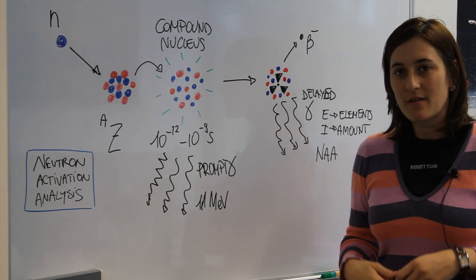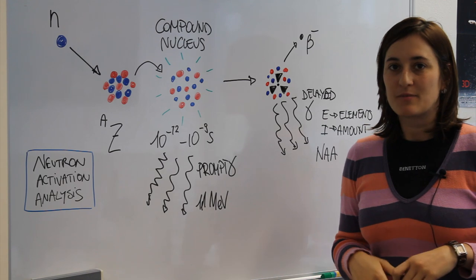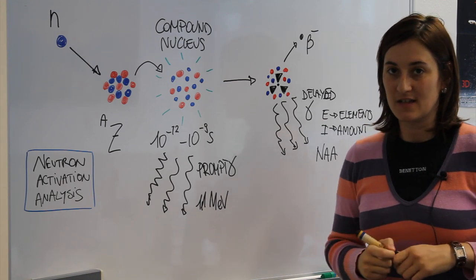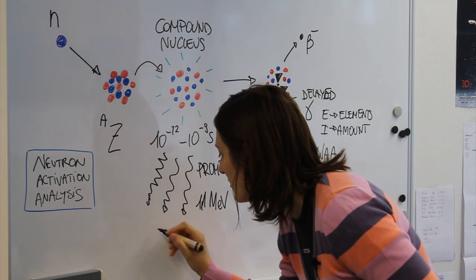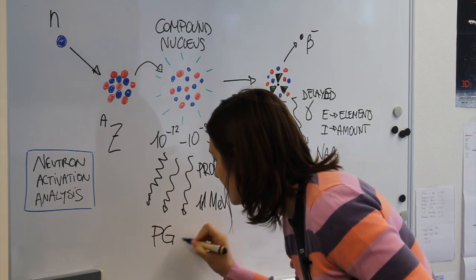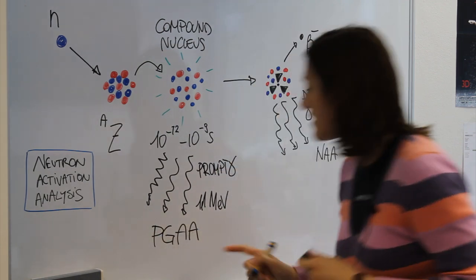A complementary method to NAA is prompt gamma ray activation analysis that uses the prompt gamma rays that are emitted from the compound nucleus.